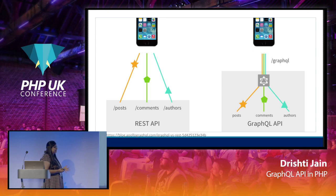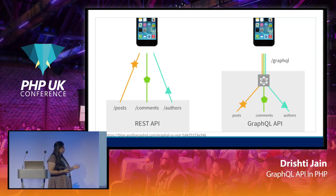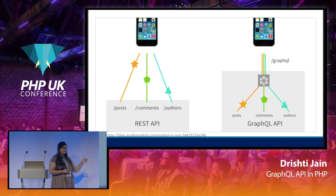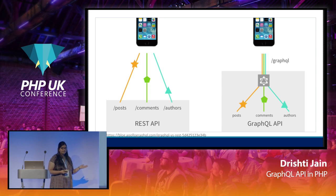A diagrammatic representation of data fetching through REST APIs versus GraphQL: in REST, you would directly have to go to each endpoint for posts, comments, and authors. But in GraphQL, you interact with the middle GraphQL layer and get the data you need in one place.